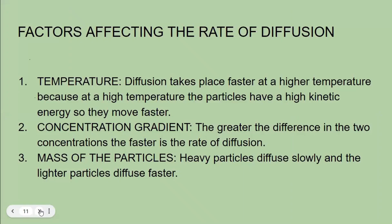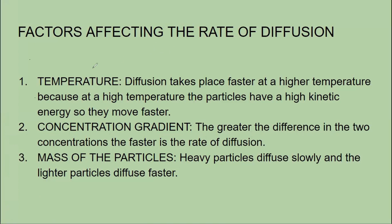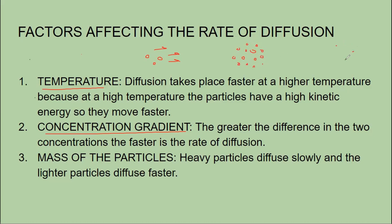Now we will look at the factors affecting the rate of diffusion — meaning how fast diffusion is taking place. Factor number one is temperature. At a high temperature, particles gain kinetic energy — their kinetic energy increases — and when particles have more kinetic energy they move faster. So diffusion takes place faster at high temperature than at low temperature.